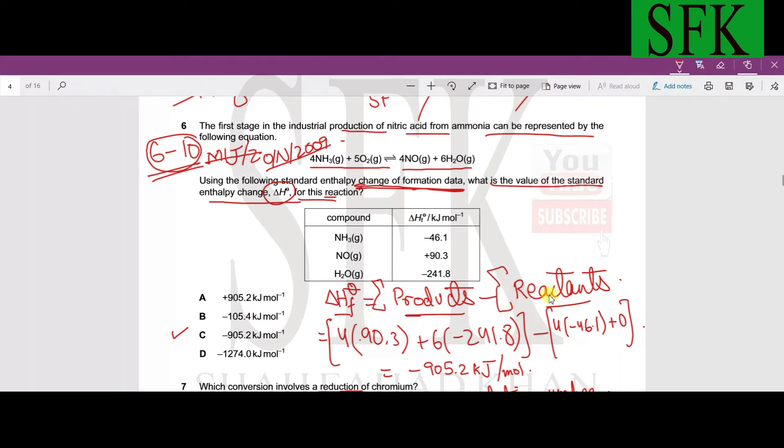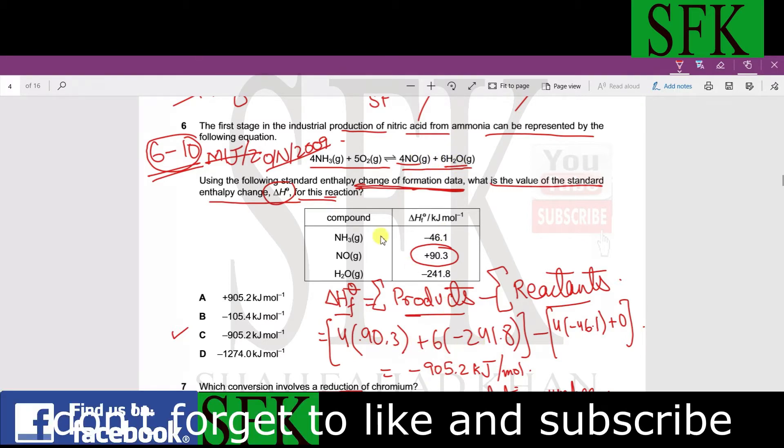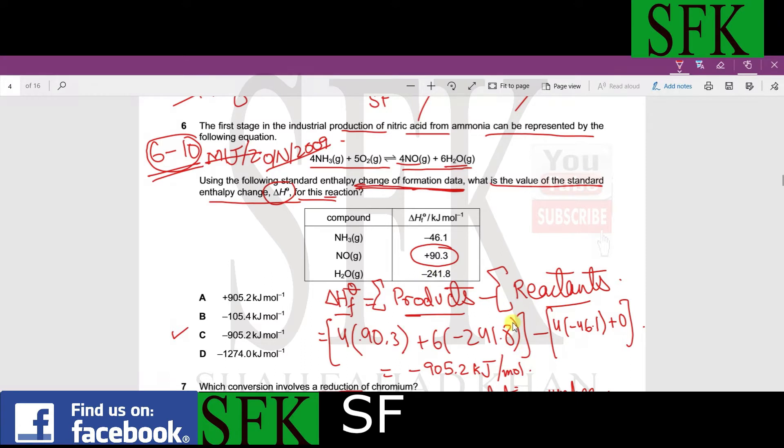If we take the example, products are nitric oxide and water. Four times the enthalpy change of formation of nitric oxide, which has an enthalpy change of formation of 90.3, so four times 90.3 plus six times the enthalpy change of formation of water which is minus 241.8.